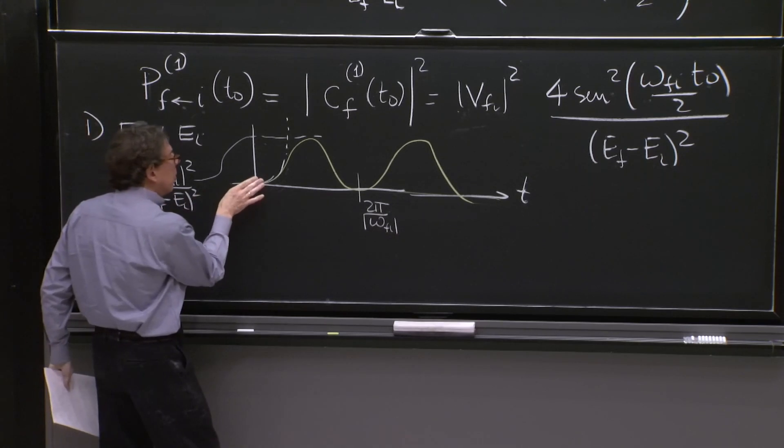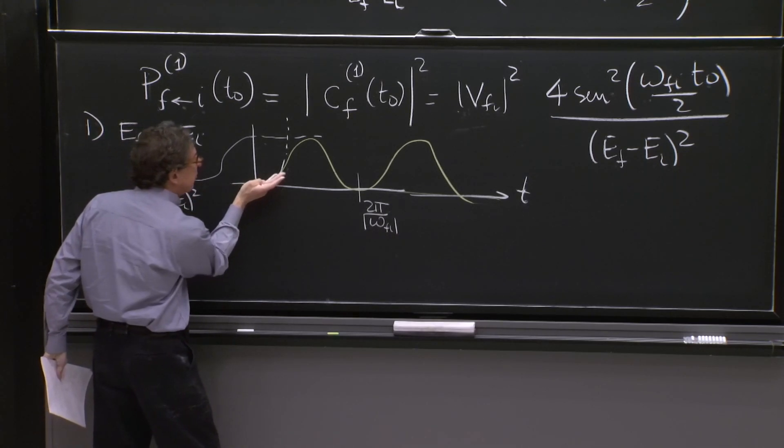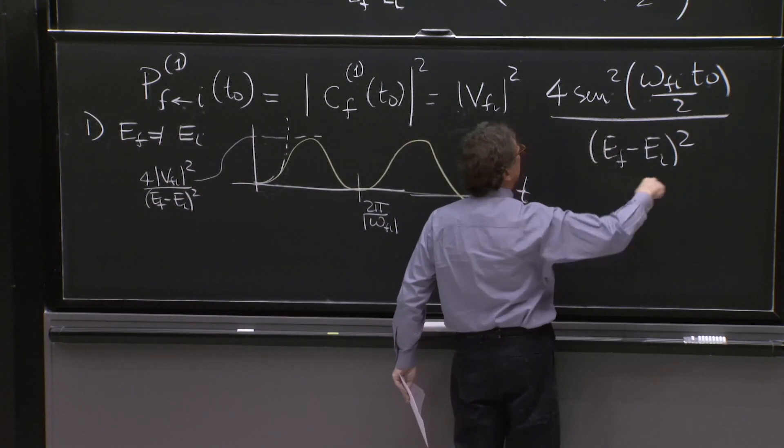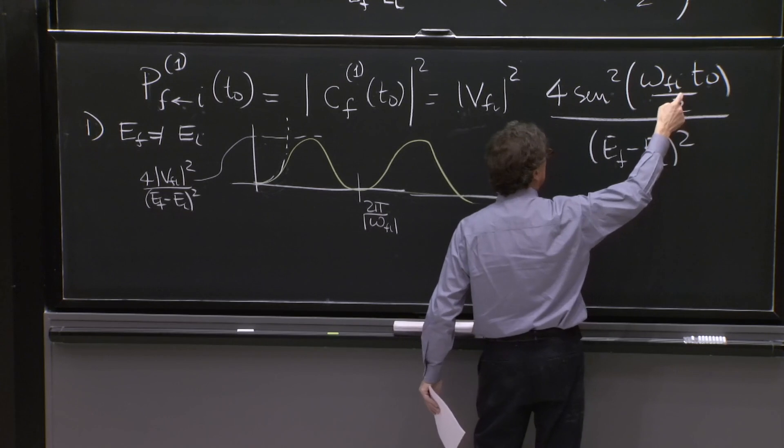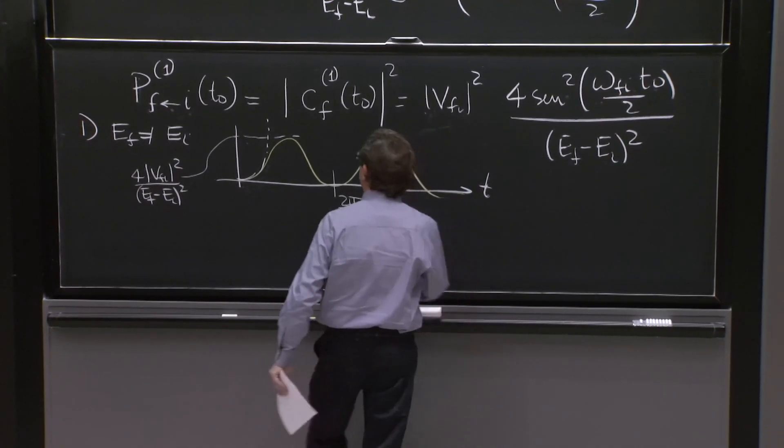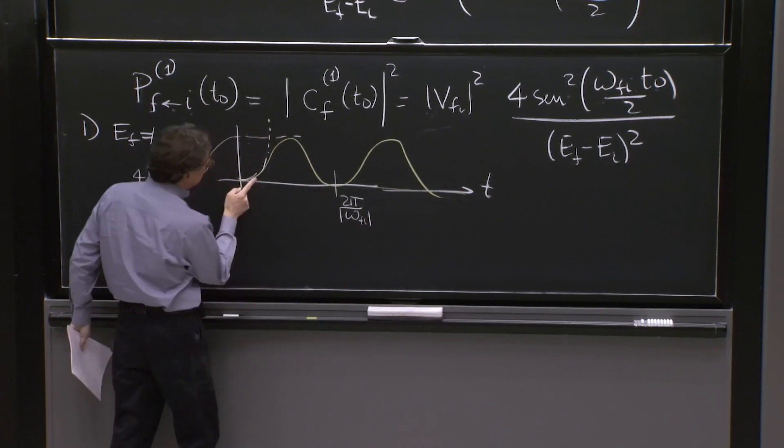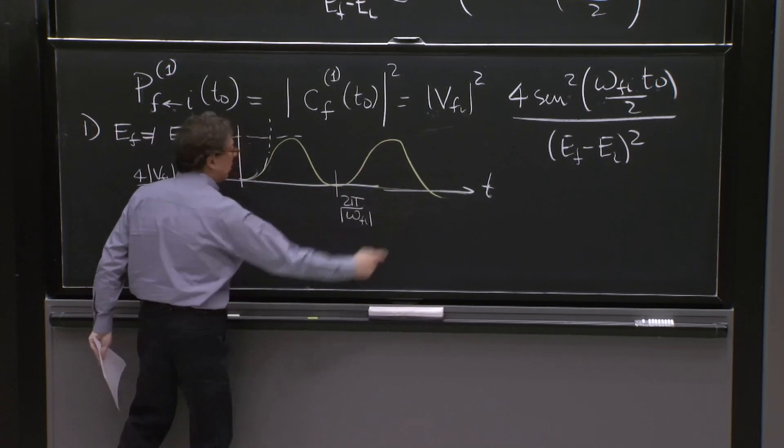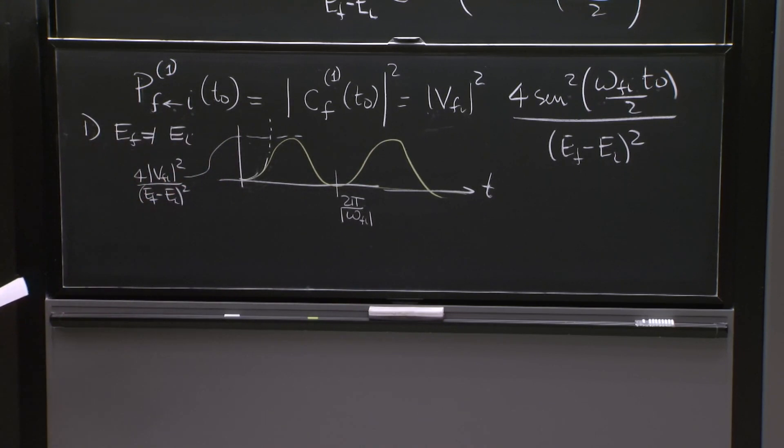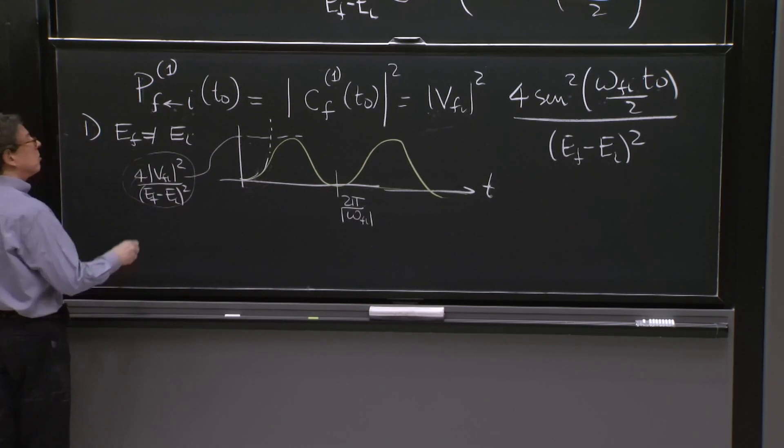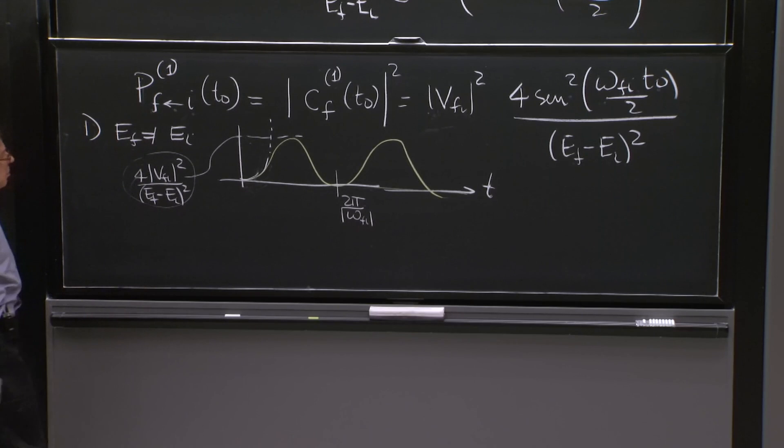So here, while the initial behavior would be quadratic for a small time, this actually is quadratic, as we will see in a second. But you can more or less see by the expansion of the sign. Then the initial quadratic growth gets tamed and becomes an oscillation here.